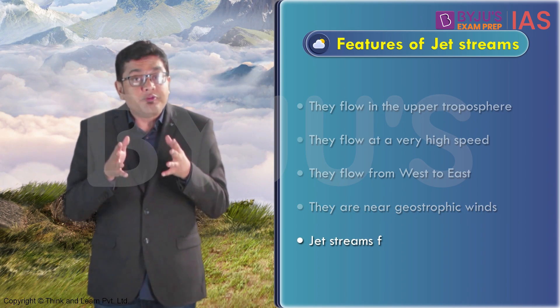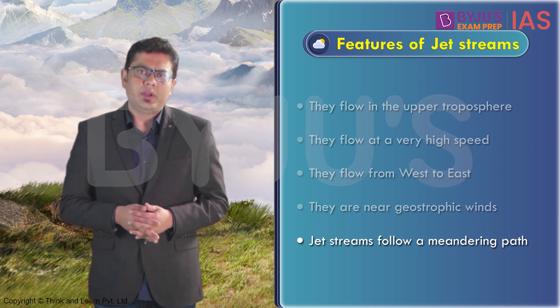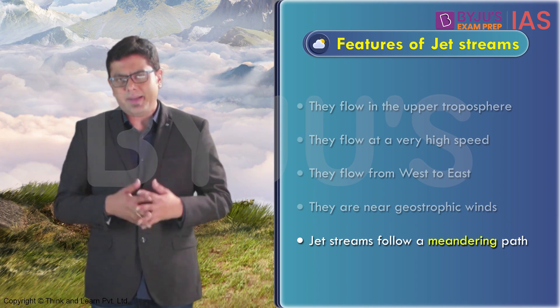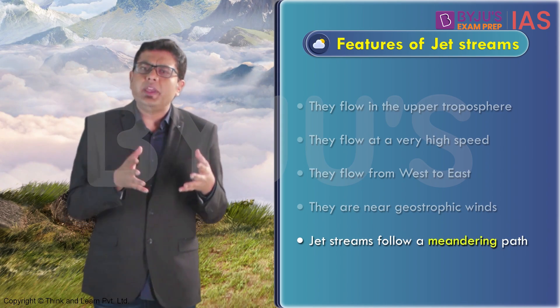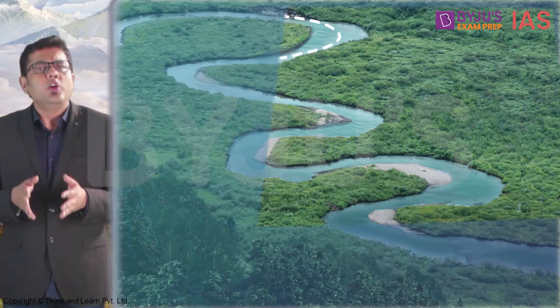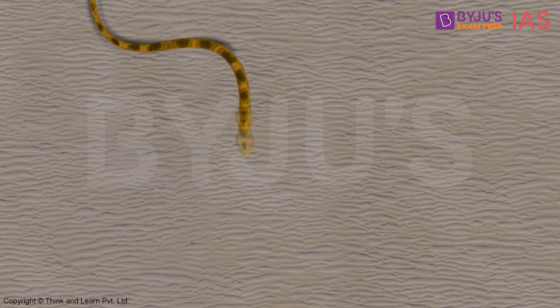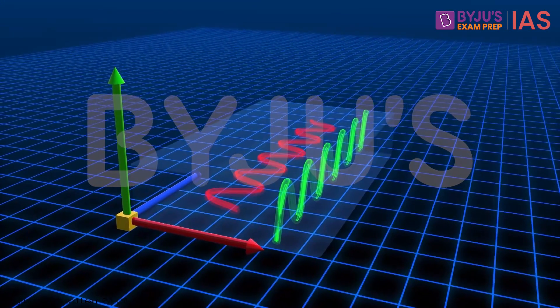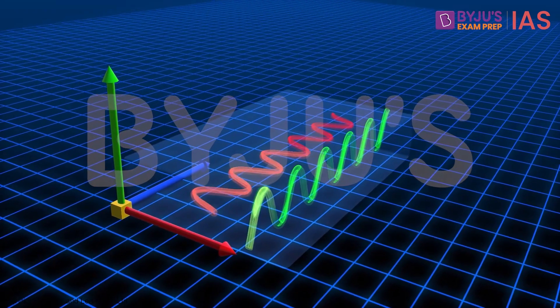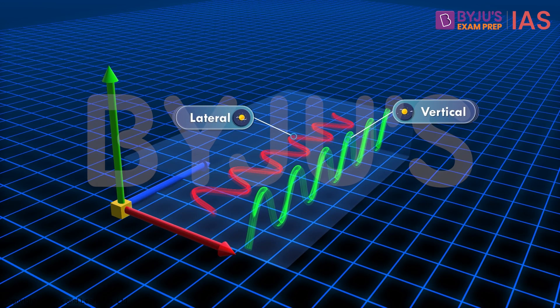Jet streams follow a meandering path. What do we mean by the term 'meandering'? You must be aware of the meanders formed when rivers flow in the plains, or the shape formed when a snake moves. Just like them, a jet stream meanders as well. They meander in two ways: vertically and laterally.